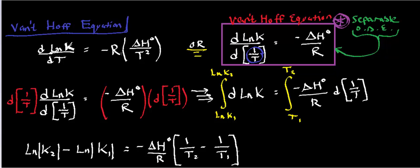Likewise, in the numerator, the function we have inside the differential is natural log of k. Now, a separable equation is one in which I can have all of one variable inside the differential on one side of the equation, and all of the other one on the other one. And that's exactly what I can do. Notice I have derivative of natural log of k over 1 over t equals negative delta H standard over R.